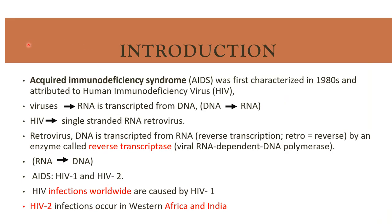Acquired immunodeficiency syndrome was first characterized in the 1980s and attributed to human immunodeficiency virus. Usually viruses have RNA transcribed from DNA, but HIV is a single-stranded RNA retrovirus. They are retro because DNA is transcribed from RNA — reverse transcription occurs, and the enzyme used for reverse transcription is reverse transcriptase enzyme, a viral RNA-dependent DNA polymerase.